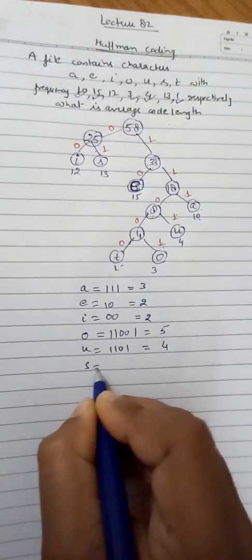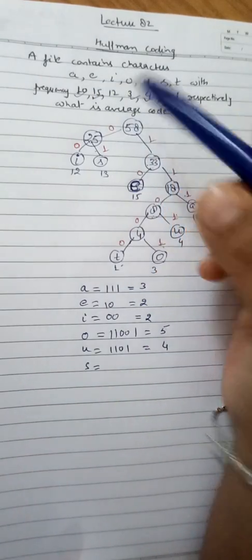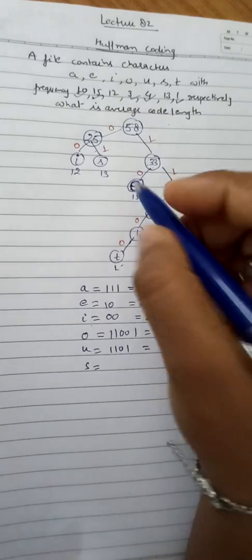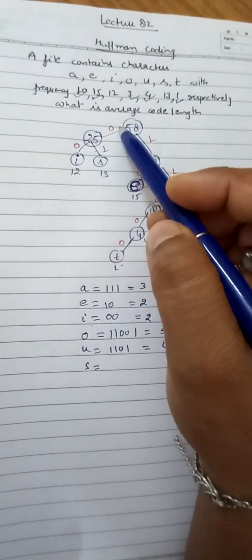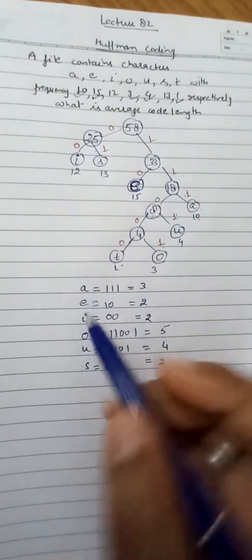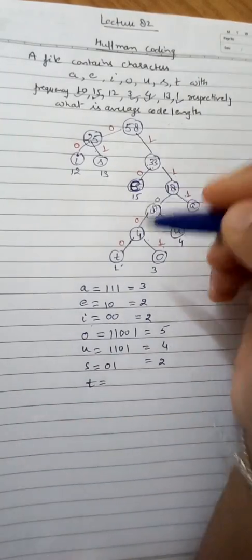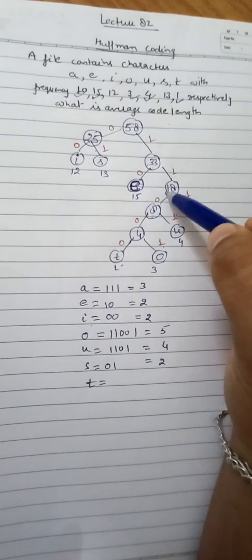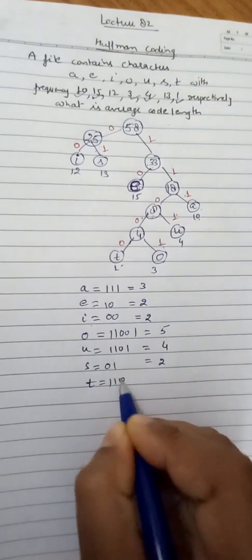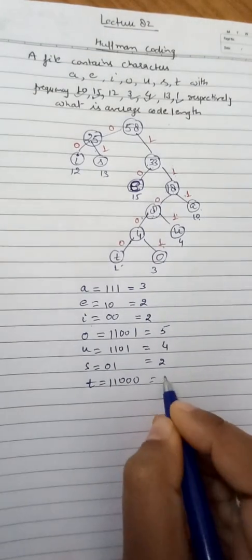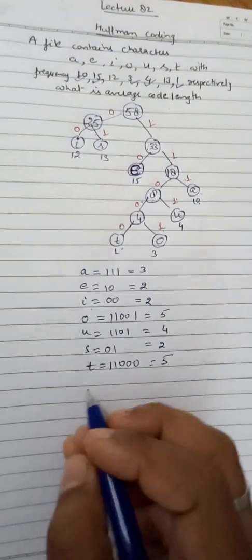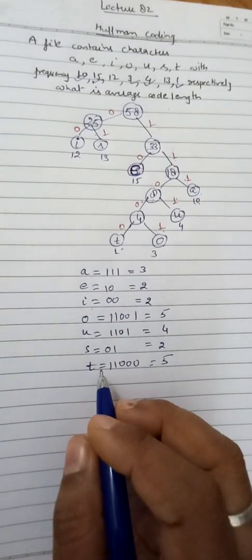For s, the path gives 2 bits: 0, 1. For t, tracing the path gives 5 bits. So we now have the number of bits for all characters: a=3, e=2, i=2, o=5, u=4, s=2, t=5.